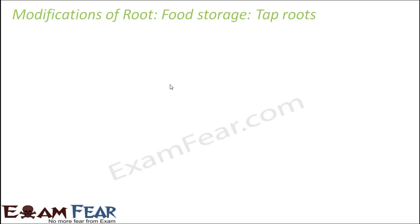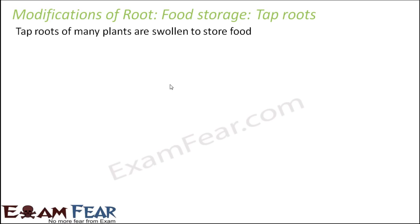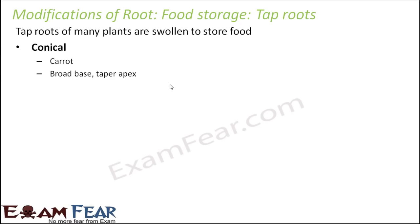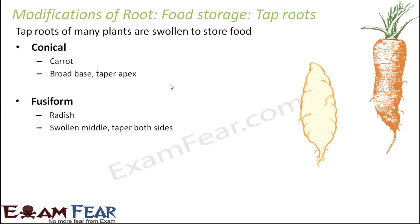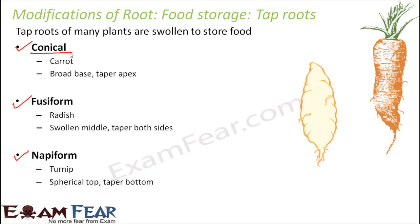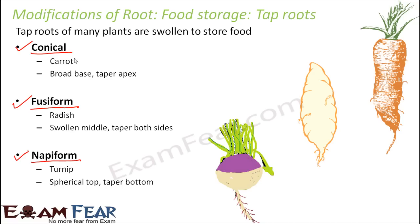Let us first talk about food storage — how tap roots get modified to store food. Tap roots of many plants are swollen to store food. To create space for storage, some roots swell up and take different shapes in different plants. The examples of tap roots which become swollen to store food are: conical, fusiform, and napiform.